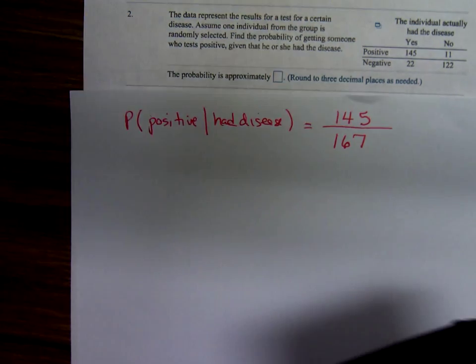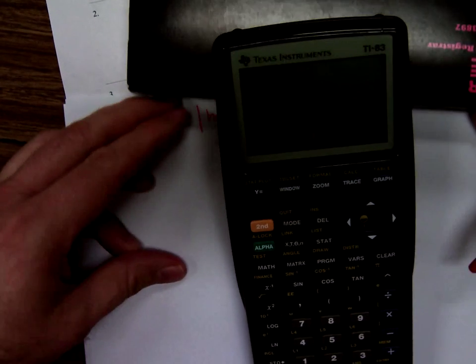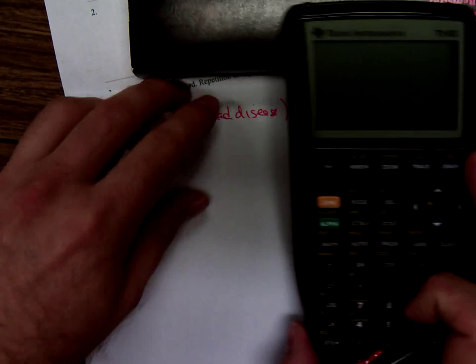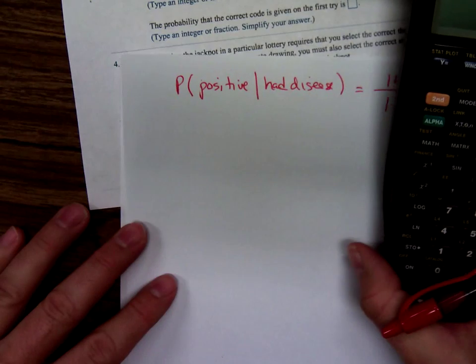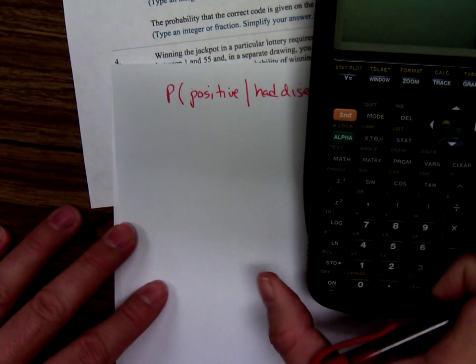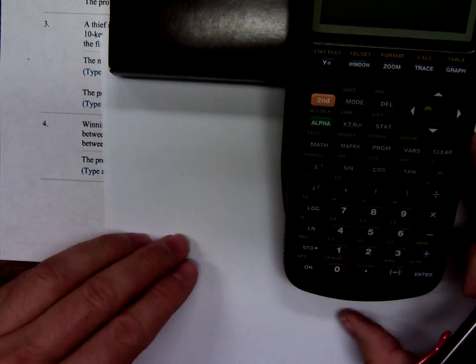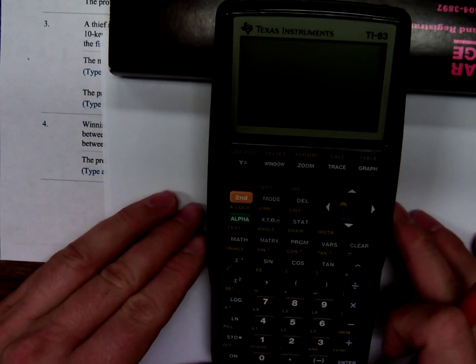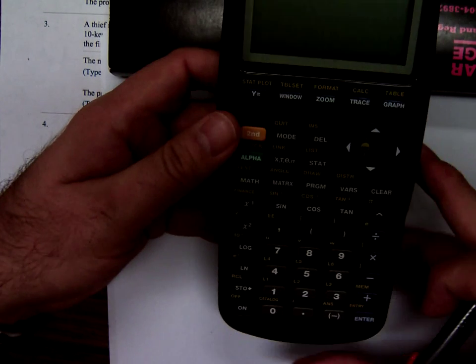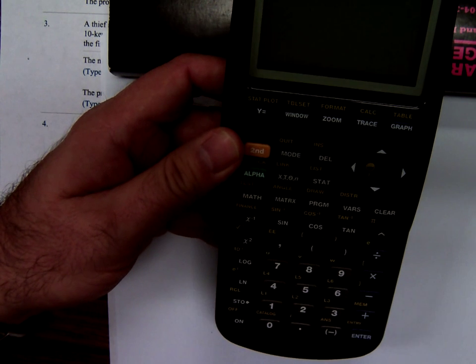Now we can punch that into our calculator. Let's see. Oh gosh, maybe something wrong. Hold it, it's sort of hard to get this calculator here without a glare.